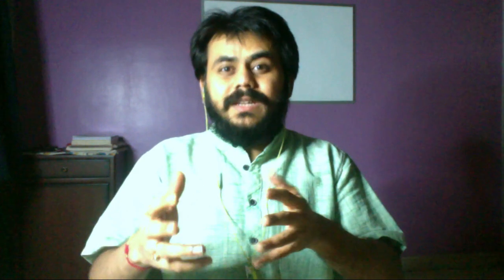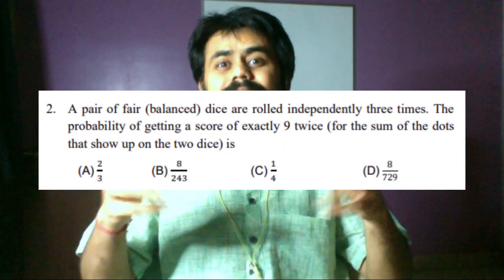The second question type is coin tossing — getting a fixed number of heads, getting a combination of heads and tails, and so on. And the third would be rolling dice.